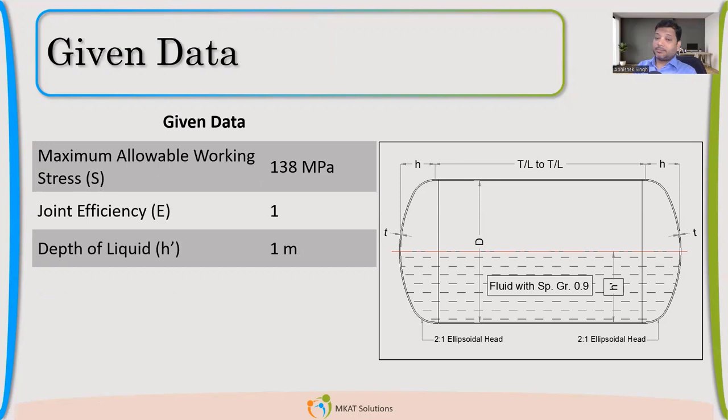At that temperature, my allowable stress will be 138 because we know that till 250, there is no variation in allowable for SA-516. So we don't have to even refer the table. Joint efficiency, we are taking 1. Depth of liquid, 1 meter. That HDAS value is 1 meter.